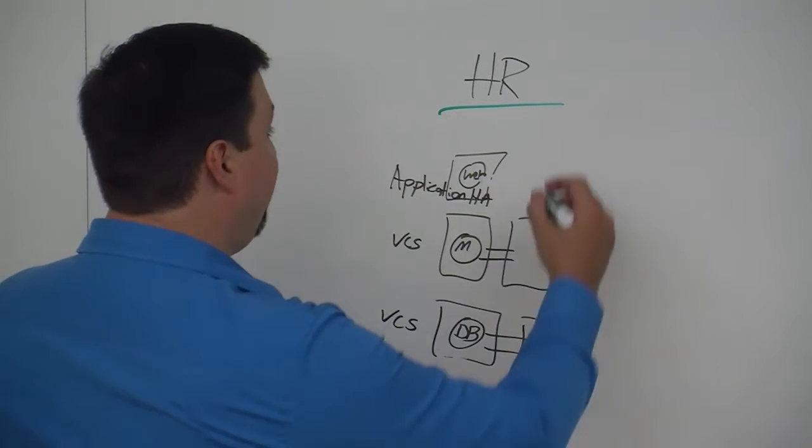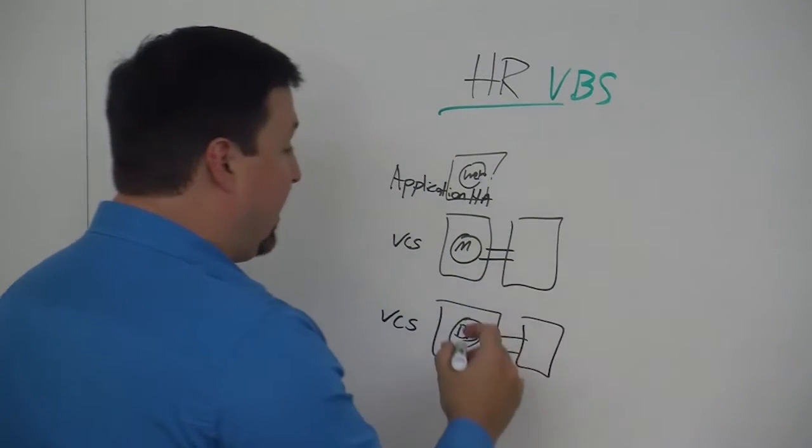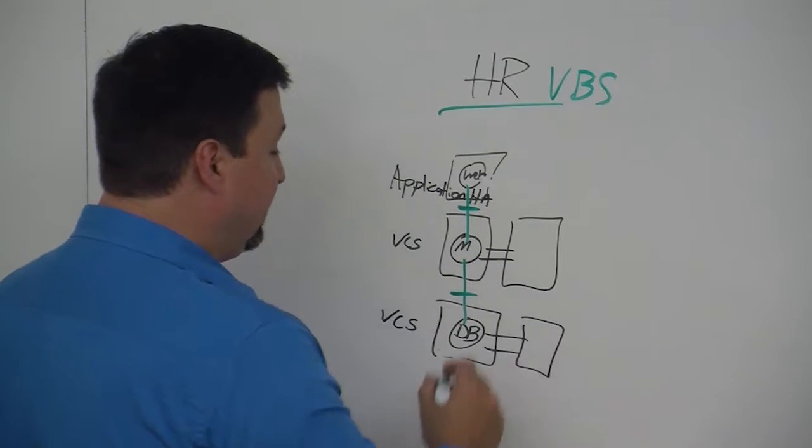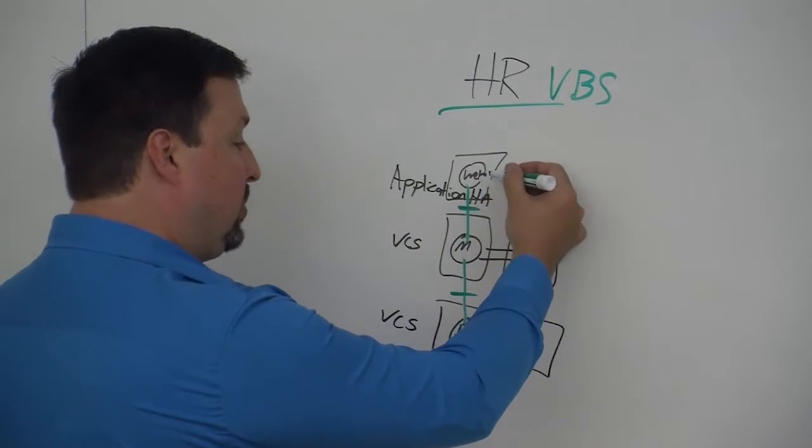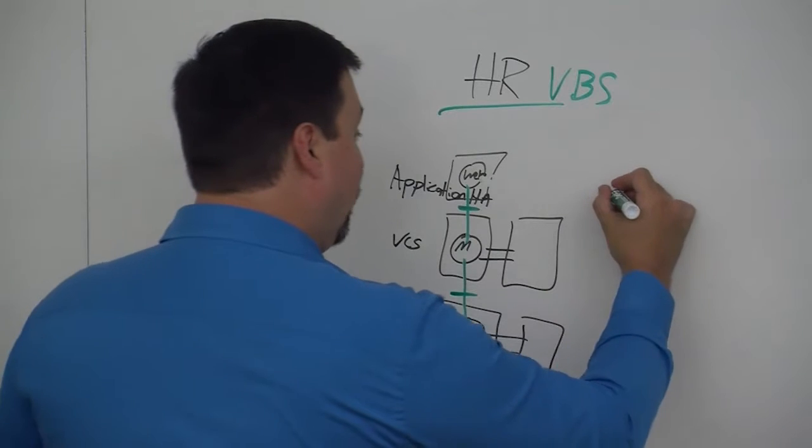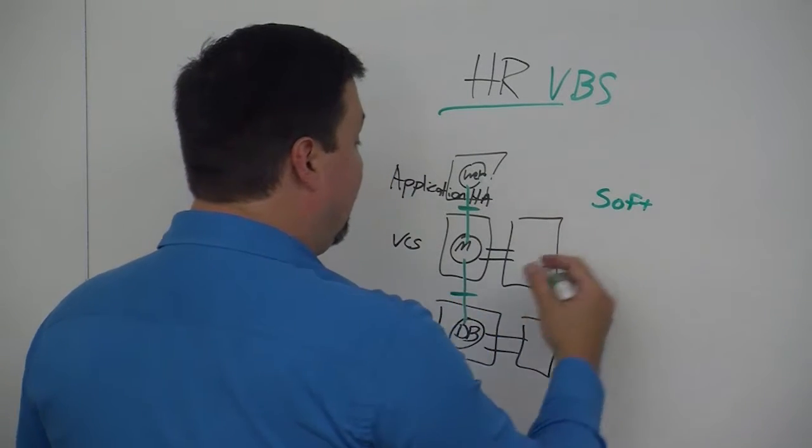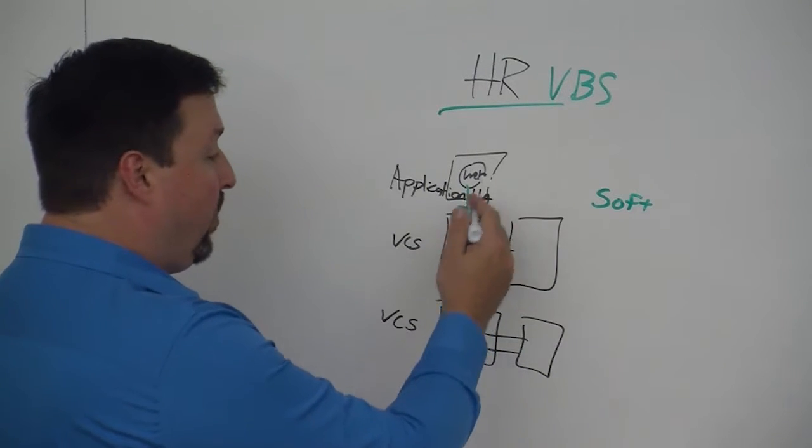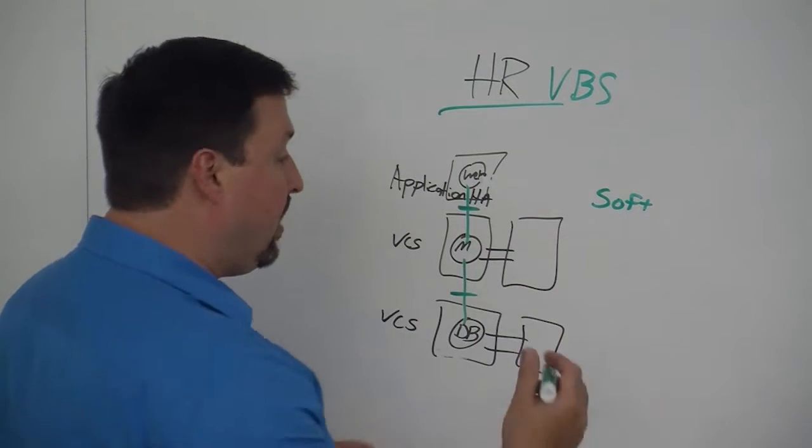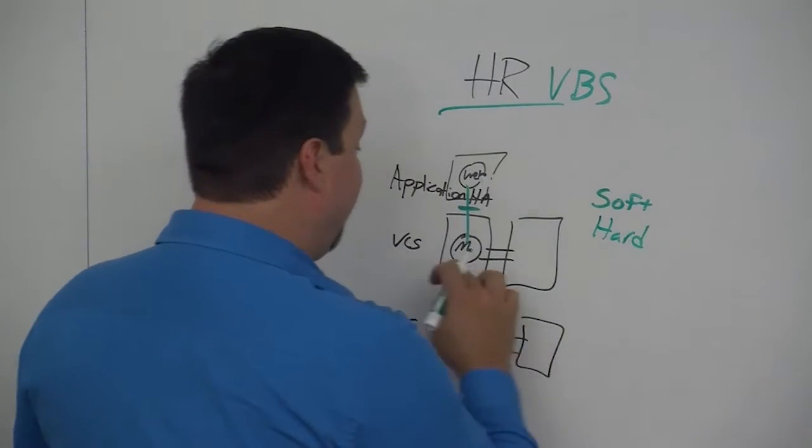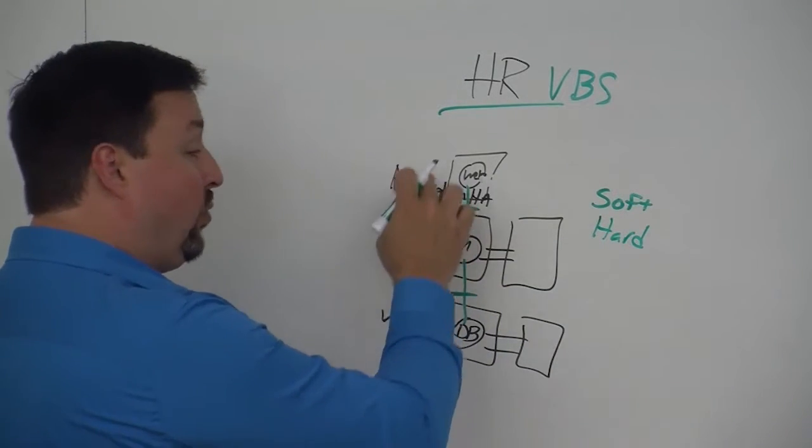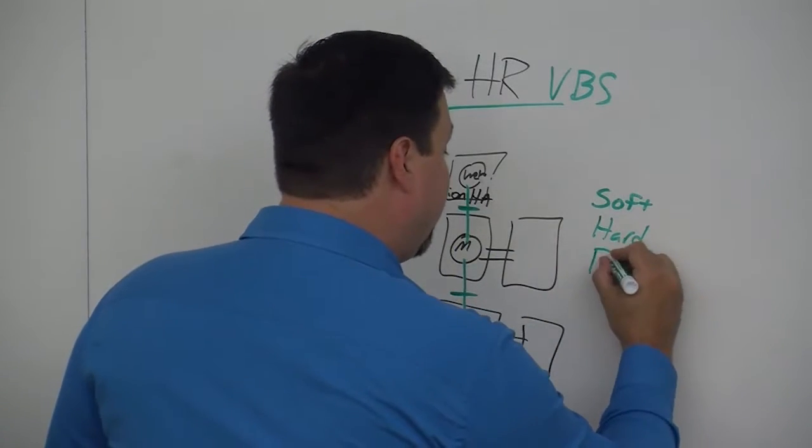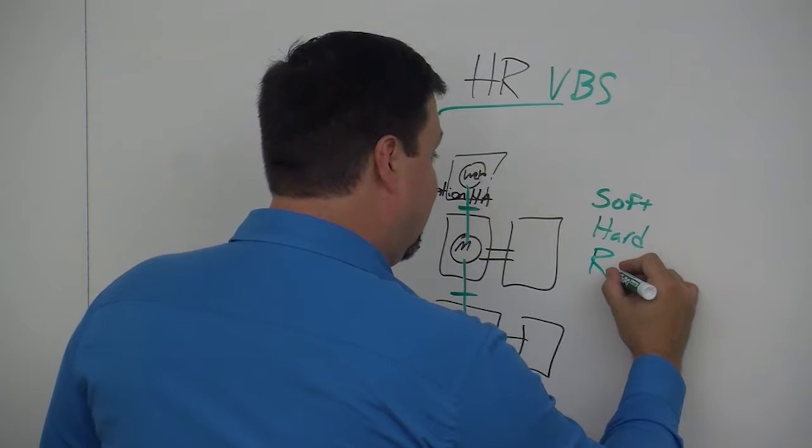What the HR VBS allows you to do is it connects all these three tiers with different levels of dependencies. We have a connection point between the web and the middle tier. We can make that connection soft, which is I don't care if the middle tier goes down, wait for it to come back up, the web will stay up. Hard dependencies, which is if the middleware goes down I want the web to go down as well. When the middleware comes up, then the web can come up. Or we have two other independent dependency types.